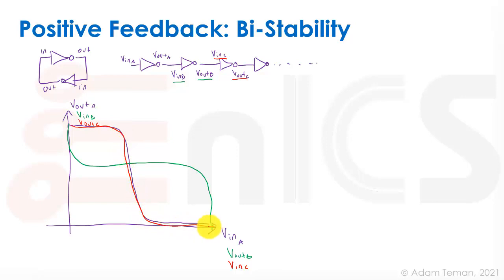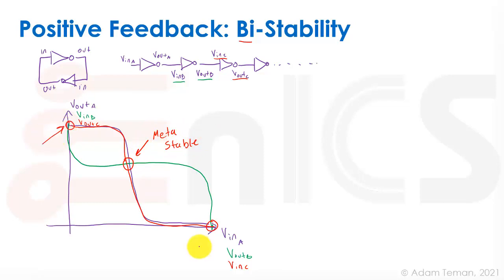When we look at these static curves, we find operating points — stable points — where the two VTC graphs cross each other. In this case, there are three crossing points. However, we don't call this tristability. The middle crossing point is what we call a metastable point, and the two outer crossings are the two bistable points.